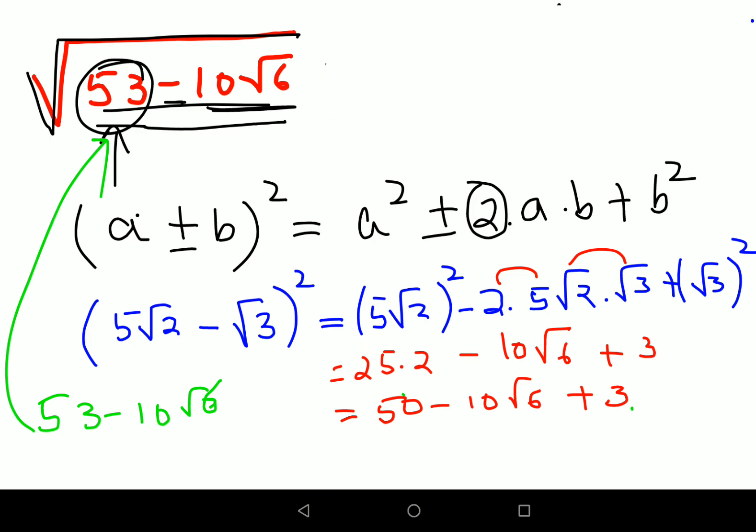Now if you look closely you can directly add 50 and 3 that gets you 53 minus 10 root 6, and that my dear friends is your answer. So now if I put things under a root, what you get is 5 root 2 minus root 3 the whole squared, and obviously we know square and the square root will cancel. So final answer for this one is nothing but 5 root 2 minus root 3.